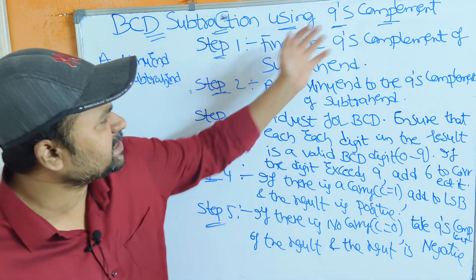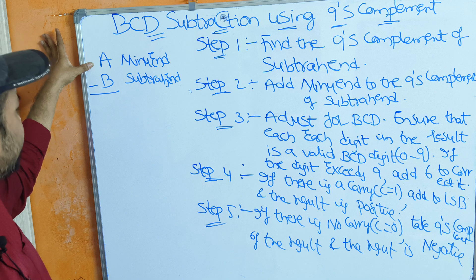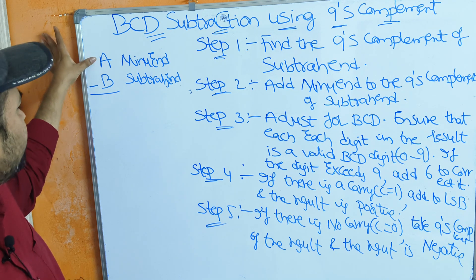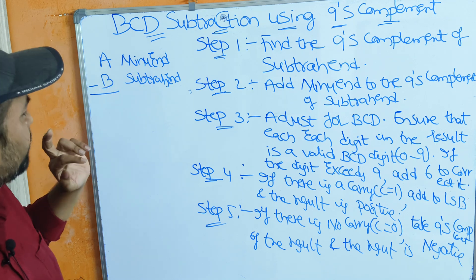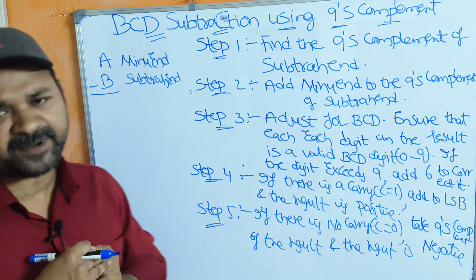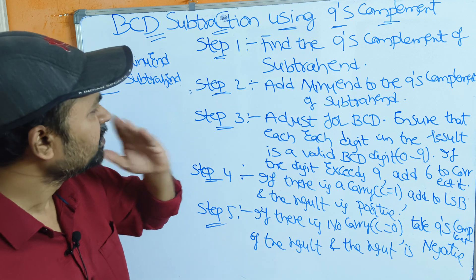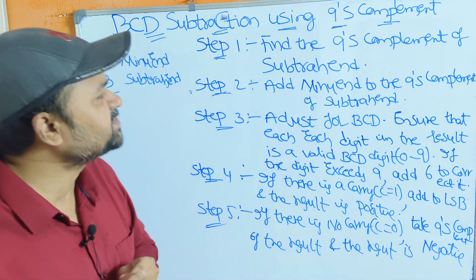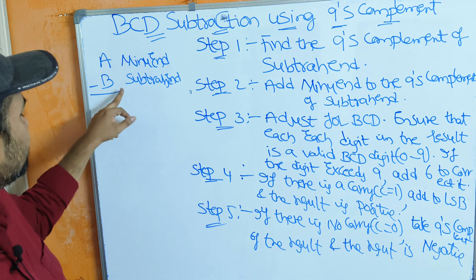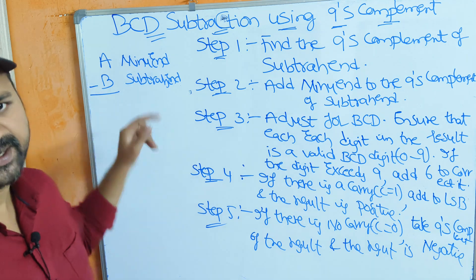Steps to perform BCD subtraction using the 9's complement. Let the first number be denoted by A, called the minuend, and the second number denoted by B, called the subtrahend. So totally we have five steps. Step 1: find the 9's complement of the subtrahend, that is the second number.